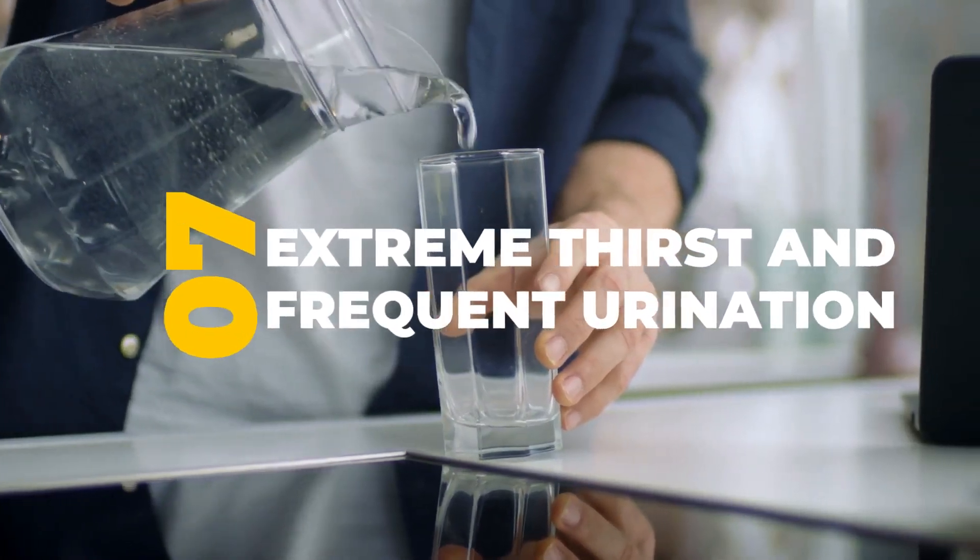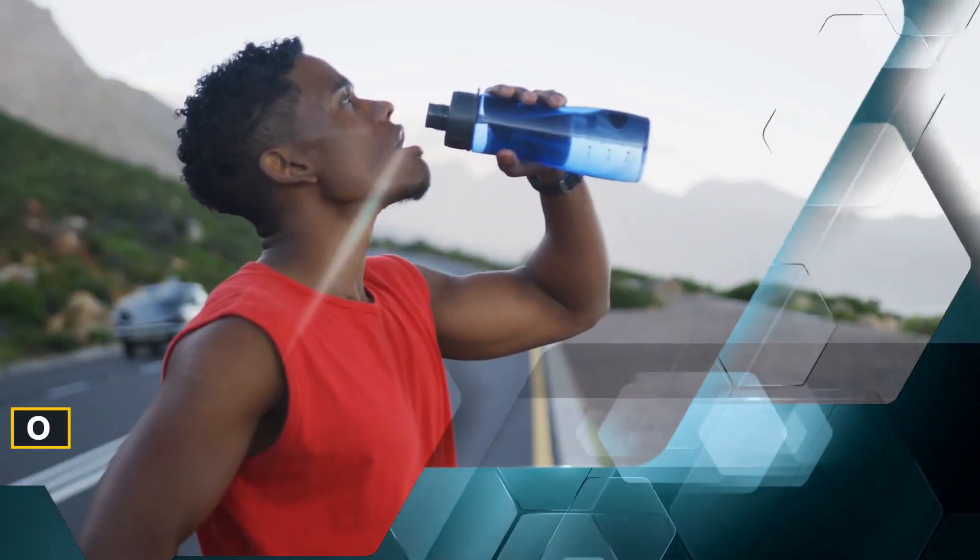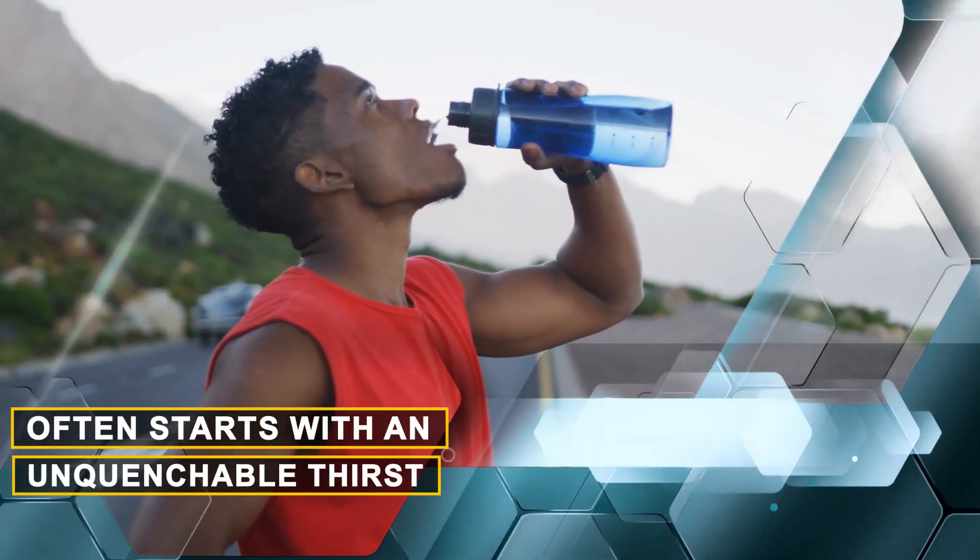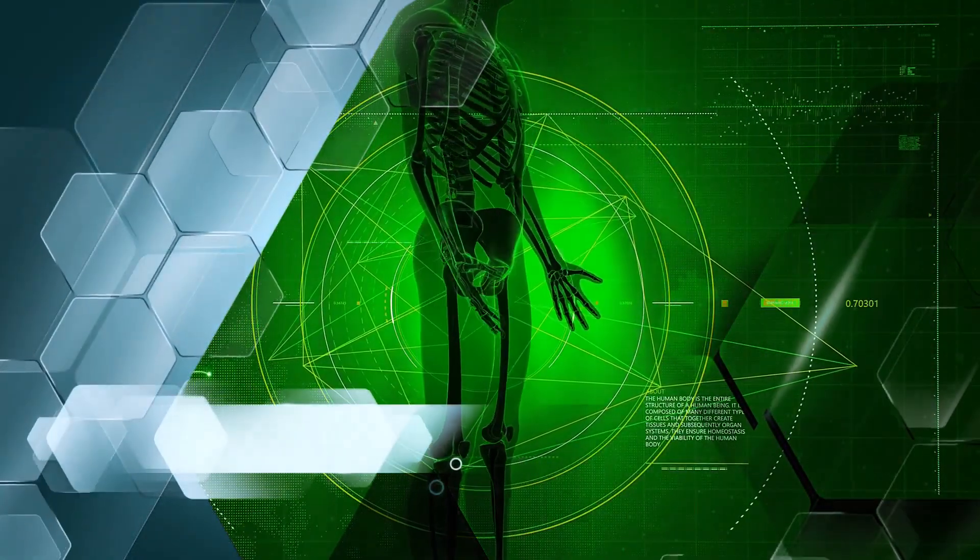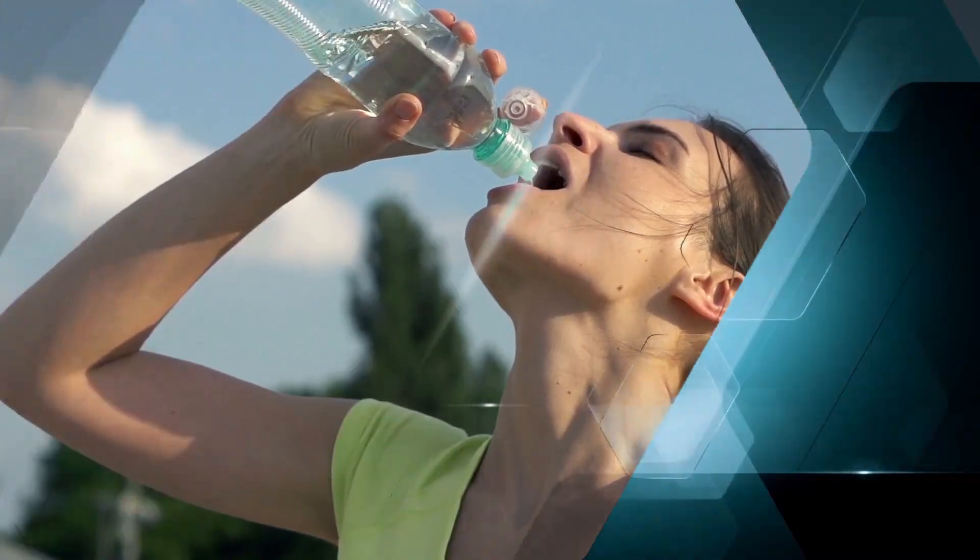Number 7. Extreme thirst and frequent urination. The initial signal of trouble often starts with an unquenchable thirst, a clear cry from your body for more fluids. No matter how much you drink, that dry sensation persists, a constant reminder that something isn't right.